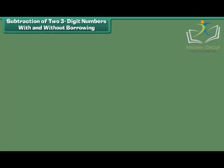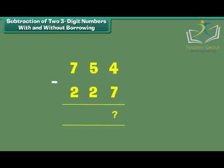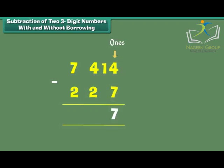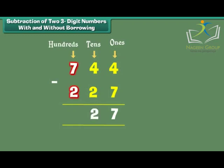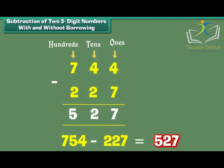4 borrows from 5 and becomes 14. 14 minus 7 is equal to 7. 5 has lent 1, so it becomes 4. 4 minus 2 is equal to 2. 7 minus 2 is equal to 5. Therefore, 754 minus 227 is equal to 527.